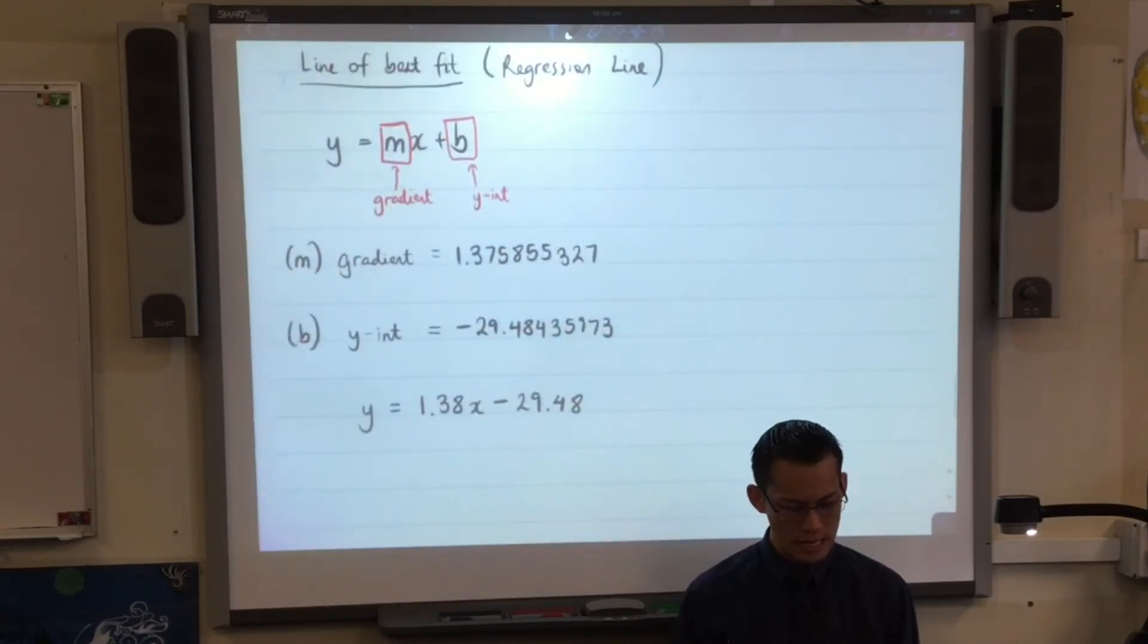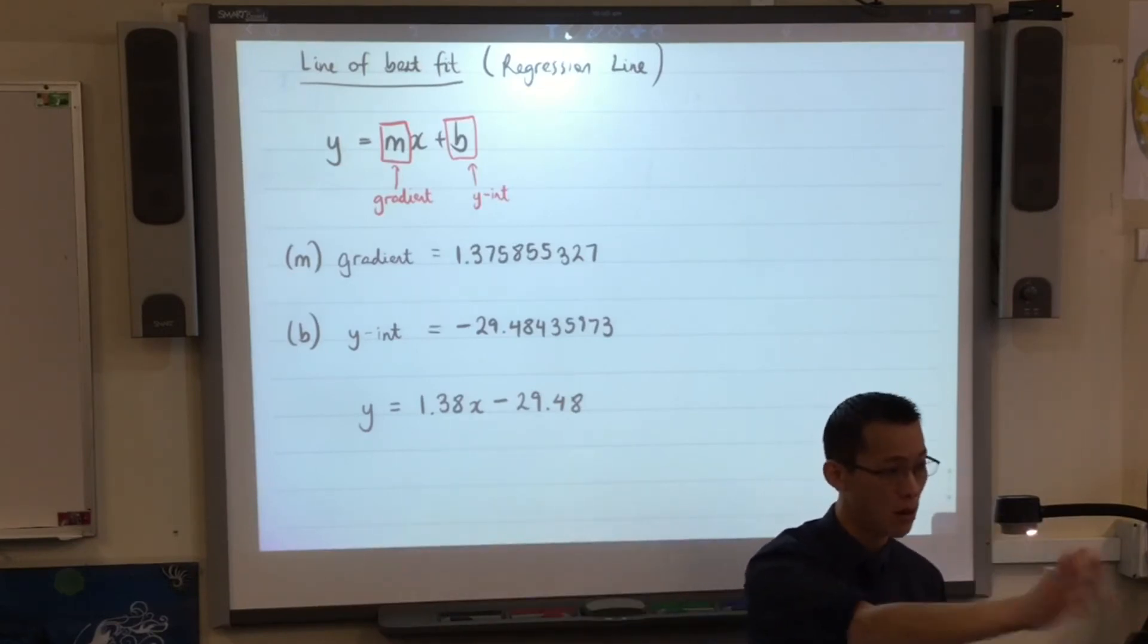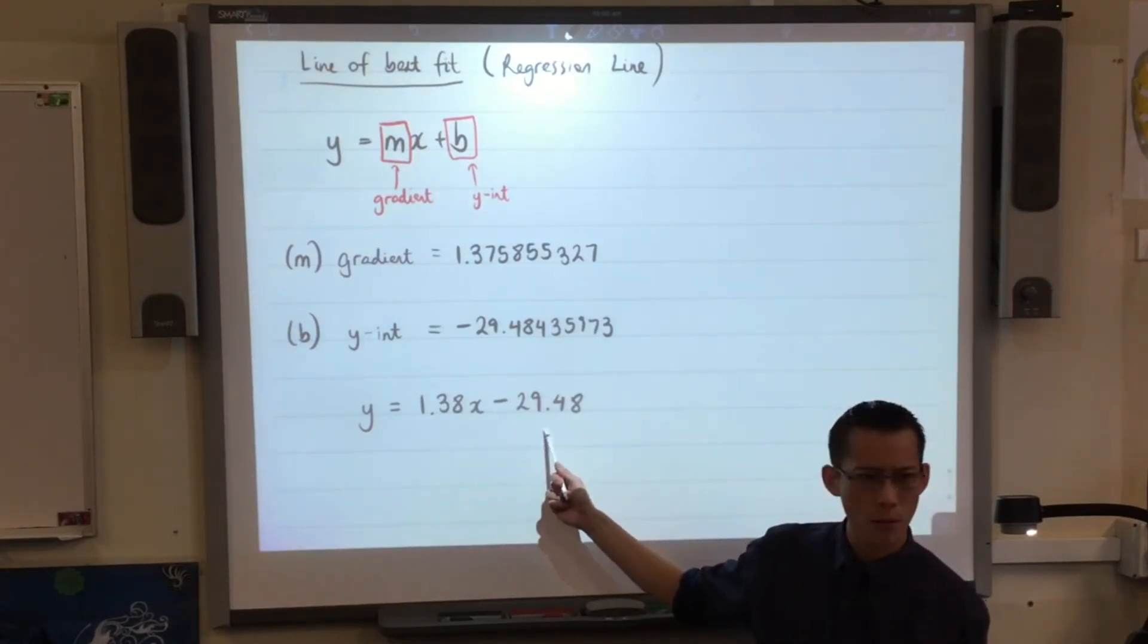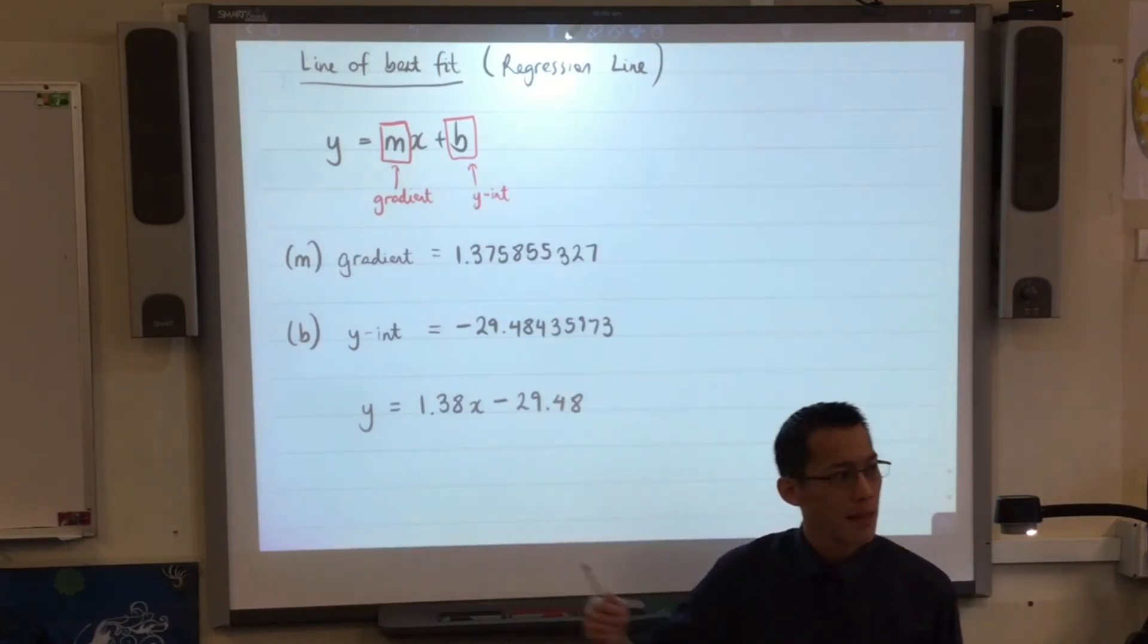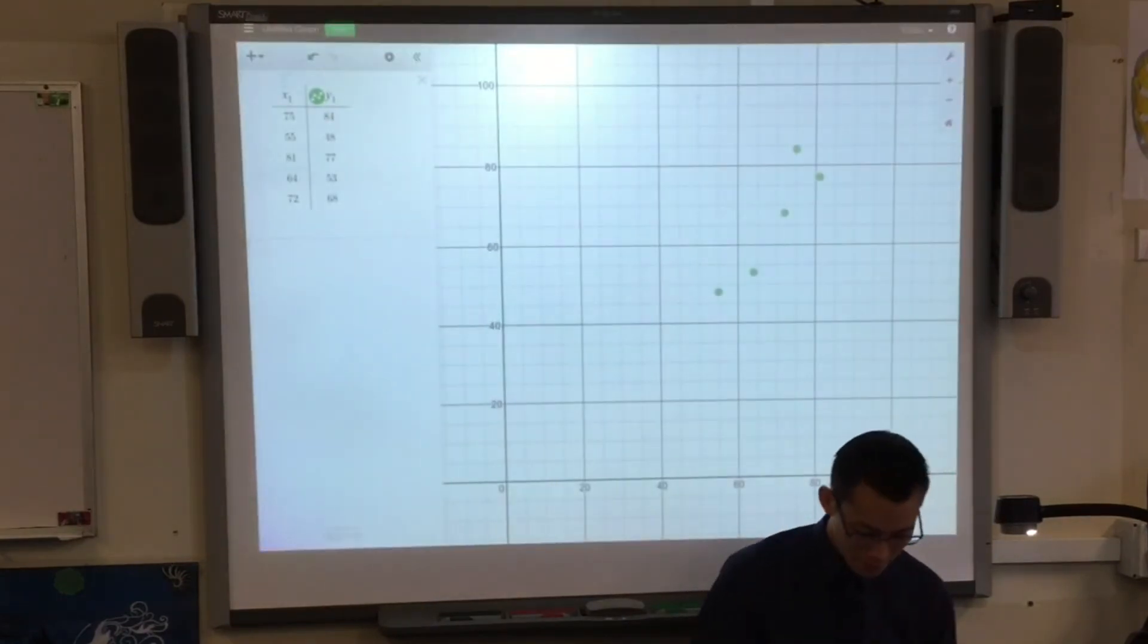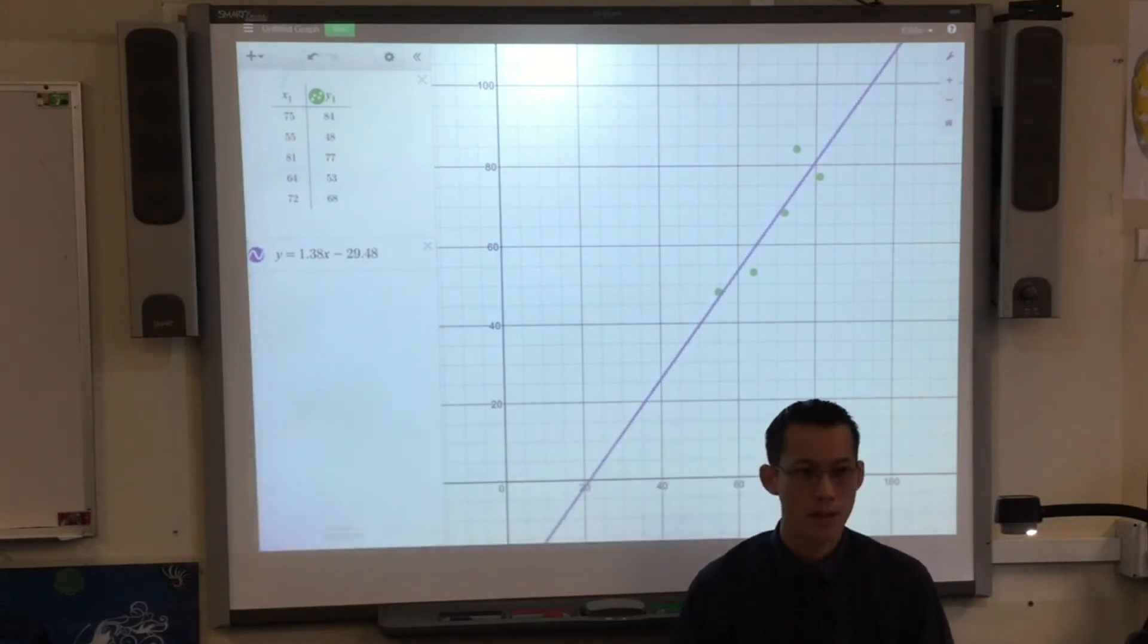Now, is this what we expected? That 1.38, that represents the gradient of the line. I want you to look on your screen, on your laptop screen. Look at where the line would go through. There's a gradient of 1.38. Look about right. Yeah. It's positive. Now, what about this? Minus 29.48. This is the Y intercept. That's where our line of best fit is going to cut the Y axis. So watch this. I've got my data here. And I'm going to put in this equation. Y equals 1.38x minus 29.48. Not bad.